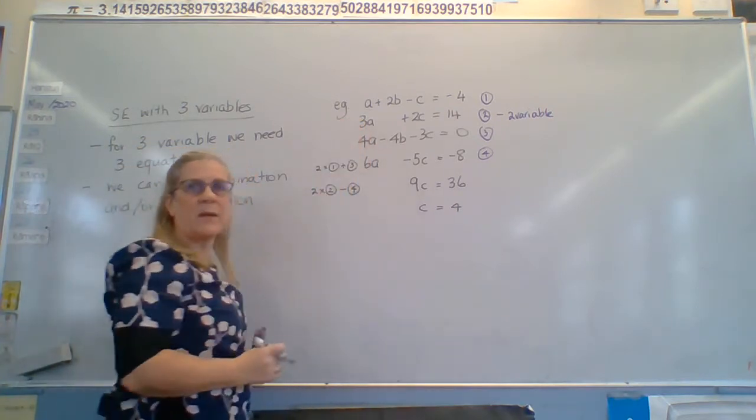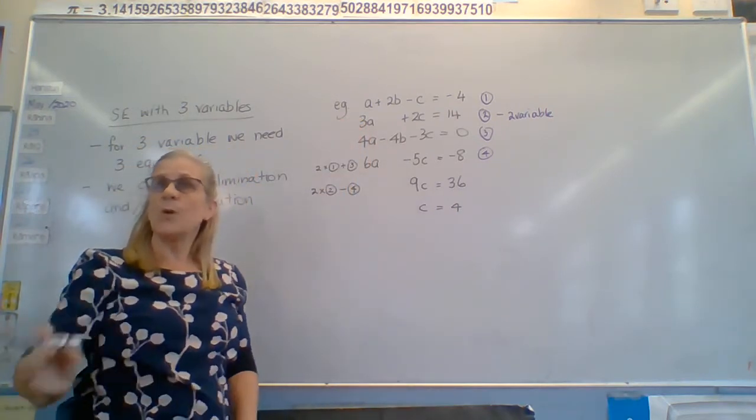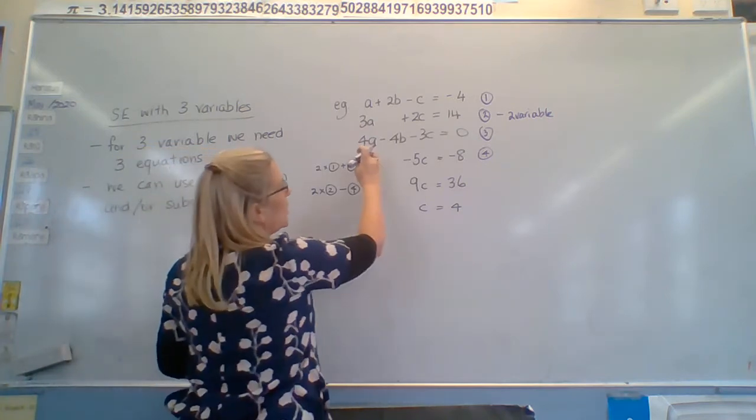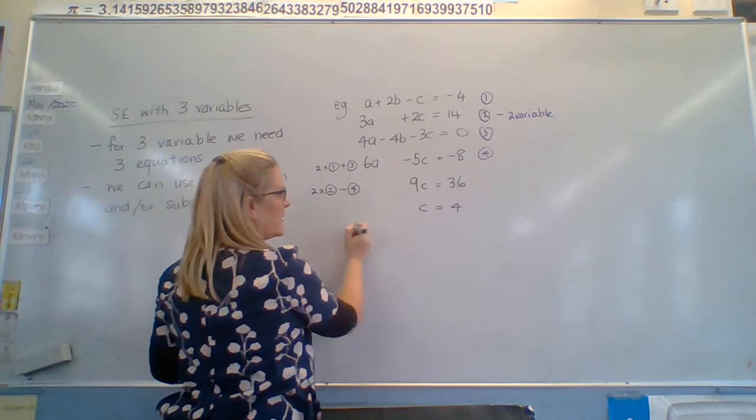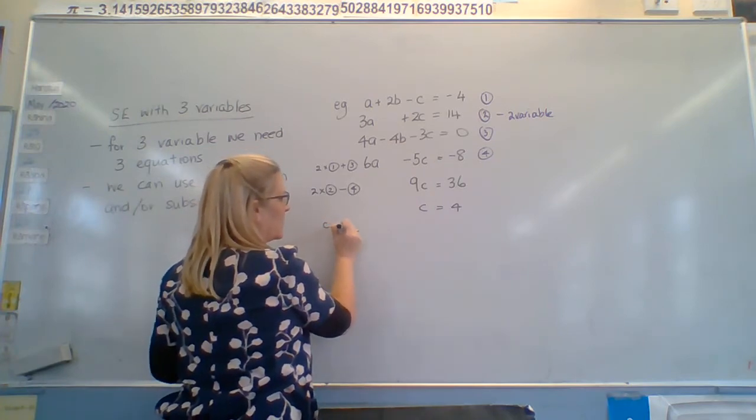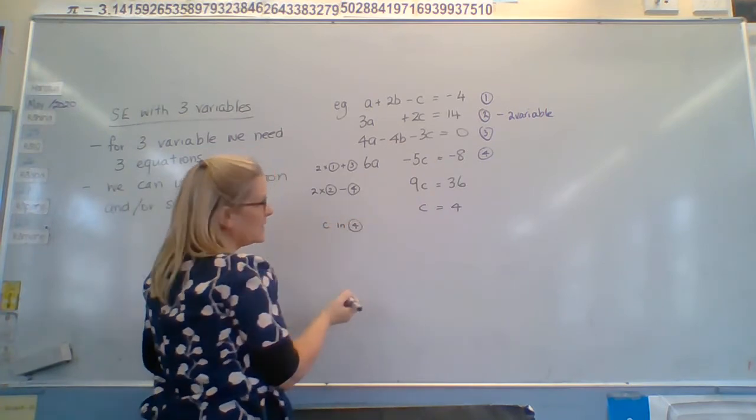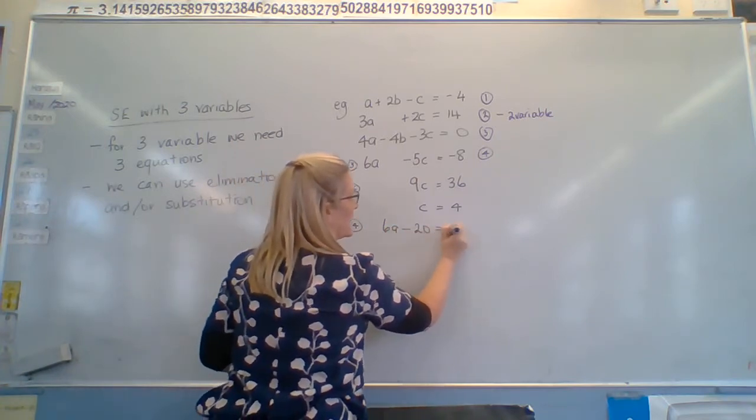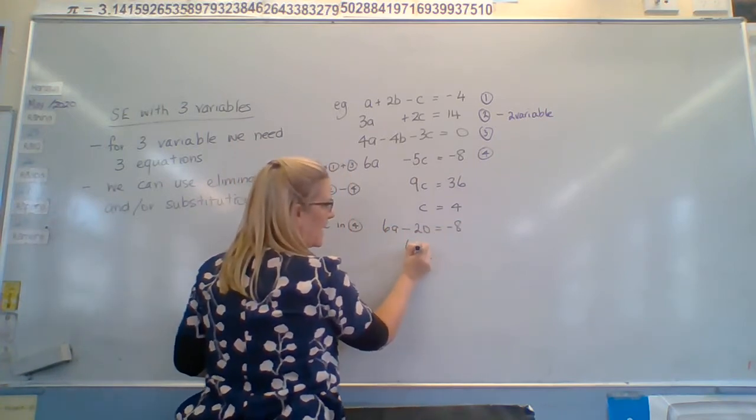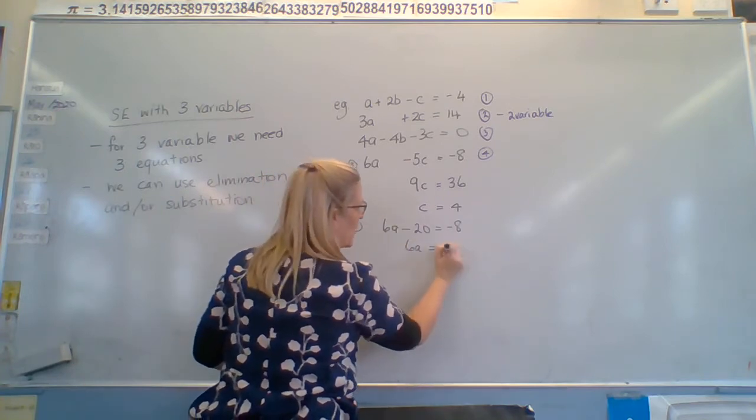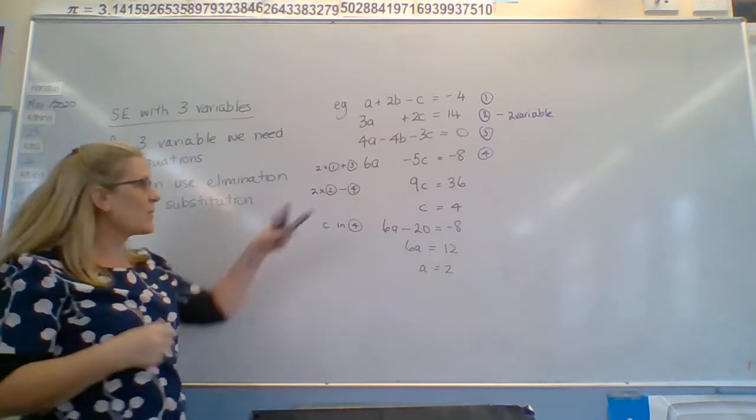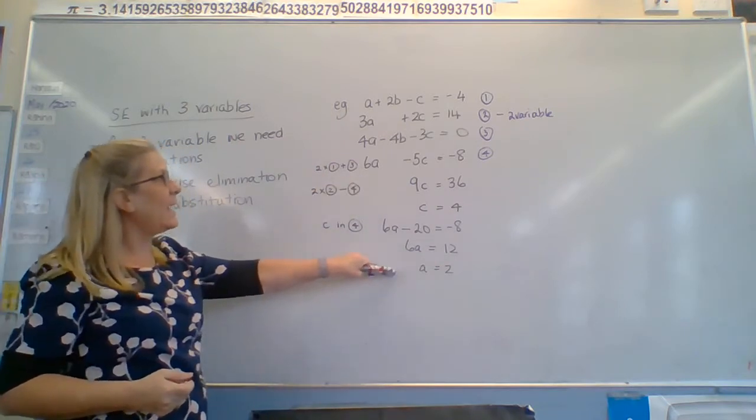Now moving back up a step. I need to go to one of these two and it doesn't matter which one. These all have the same answers. So it doesn't matter which one we use. So if I use this one in four. So c in four gives us six a minus twenty equals negative eight. So six a equals twelve a is two.